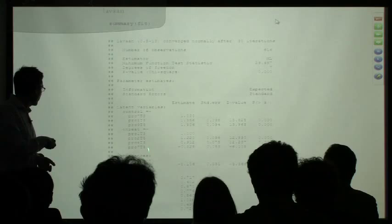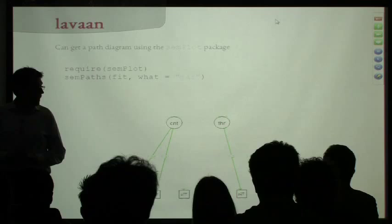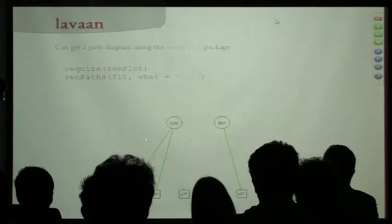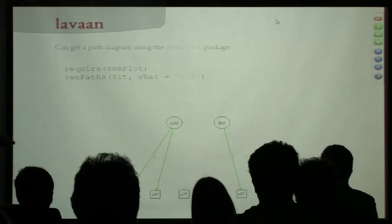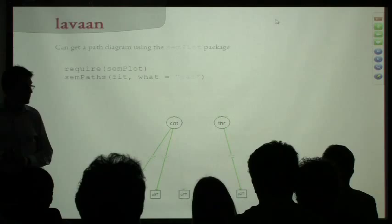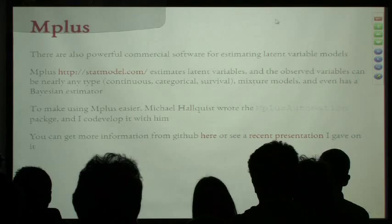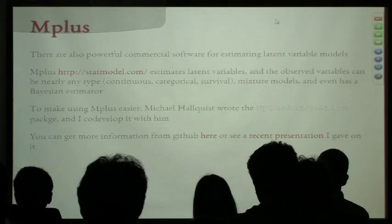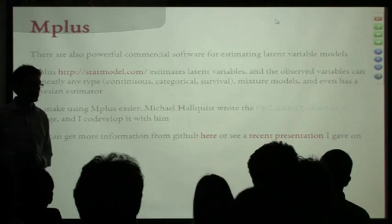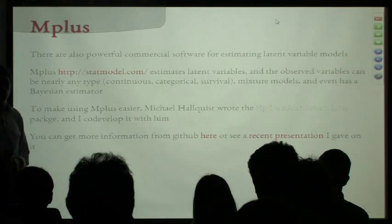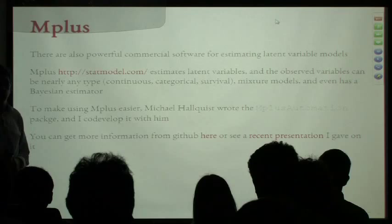Question about the EM algorithm for latent variables: the EM algorithm is a great solution. The missing latent variables are basically a missing data problem, so you can use the EM algorithm — that's actually one way factor analysis can be done. Mixed effects models can also be estimated with the EM algorithm. M-plus uses the EM algorithm for some of its models. It's not quite the fastest algorithm, but often used for the first part of optimization, sometimes switching between EM and Newton-Raphson adaptively.